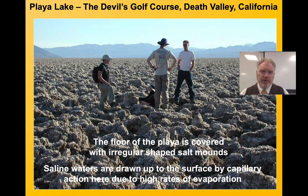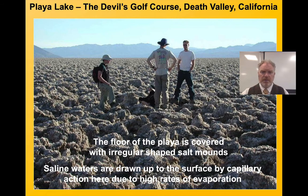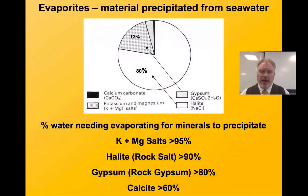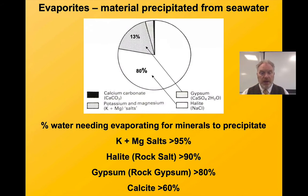The other place we can get chemical sediments is in what we call playa lakes. These are lakes in desert environments, like this particular one in Death Valley. Unusually, this one's quite lumpy — often salt flats are very flat, where land speed records tend to be set. Where we have a lake in a desert, often the only exit for the water is by evaporation.